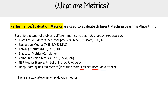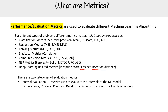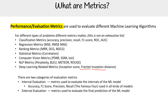There are two categories of evaluation metrics. Internal evaluation metrics are used to evaluate the internals of an ML model — so accuracy, F1 score, precision, and recall, which I call the famous four used across all kinds of models. External evaluation metrics are used to evaluate the final prediction of an ML model.